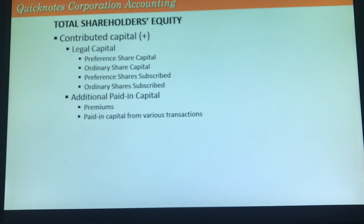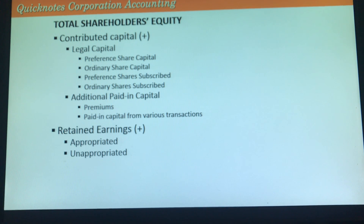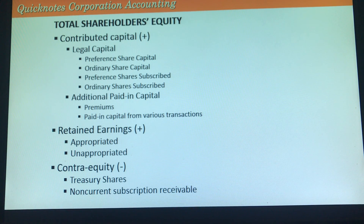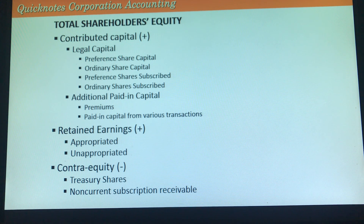The next part of shareholders' equity is retained earnings. We have appropriated retained earnings, which are retained earnings set aside for a specific purpose, while unappropriated retained earnings are those that we can distribute as dividends. The last part — which is not considered part of total equity but needs to be highlighted — consists of contra equity accounts: treasury shares reported at cost, and non-current subscription receivable. When subscription receivable is current or collectible within one year, report it as a current asset; when non-current, it becomes a contra equity account.